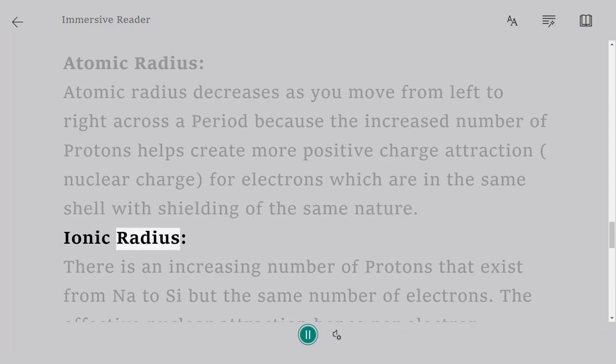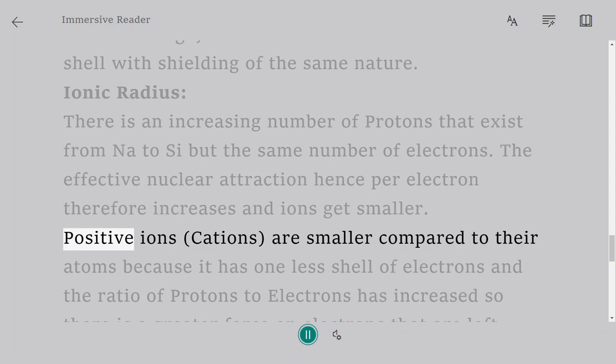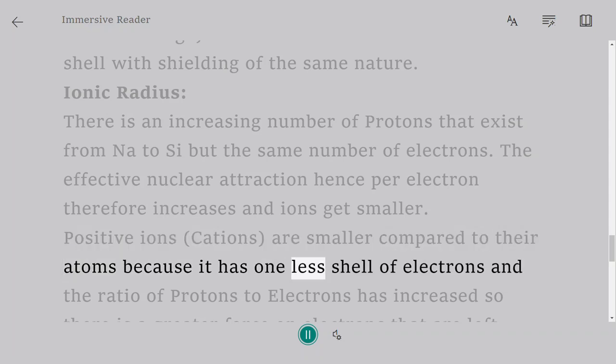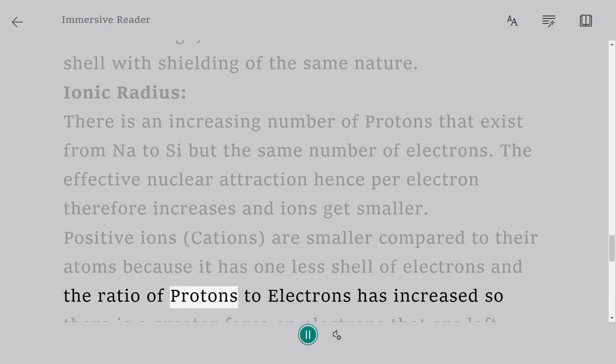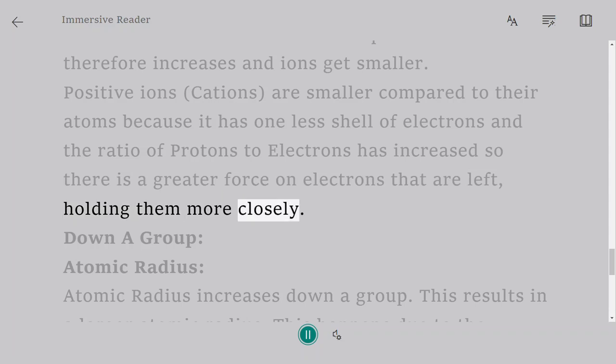Ionic Radius: There is an increasing number of protons that exist from Na to Cl, but the same number of electrons. The effect of nuclear attraction per electron therefore increases and ions get smaller. Positive ions (cations) are smaller compared to their atoms because it has one less shell of electrons and the ratio of protons to electrons has increased, so there is a greater force on electrons that are left, holding them more closely.